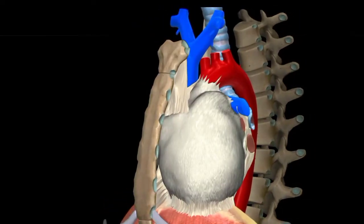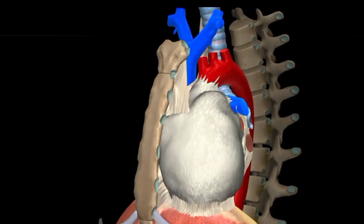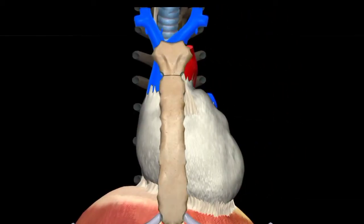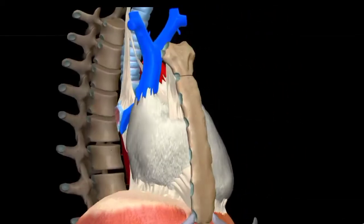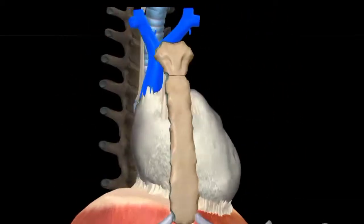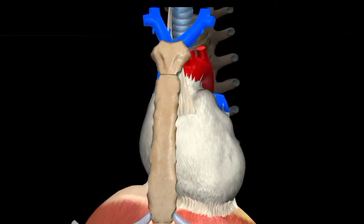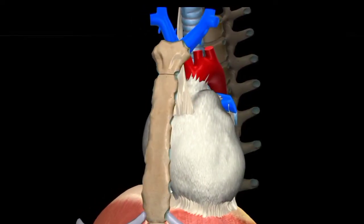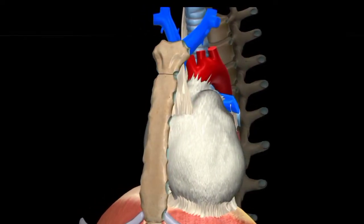Pericardium is simply a fibrous sac which encloses the roots of large blood vessels and the heart.